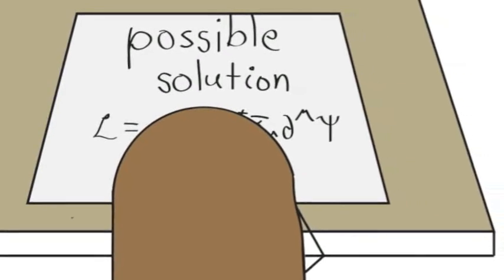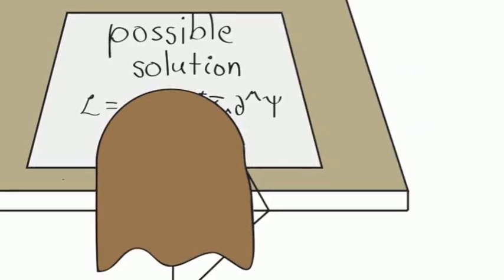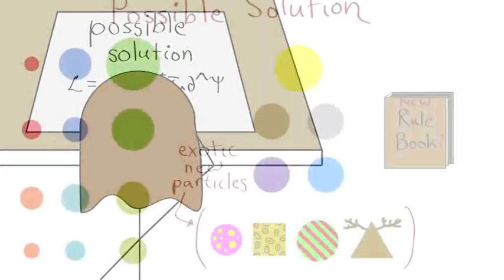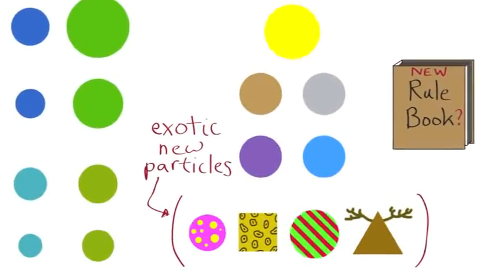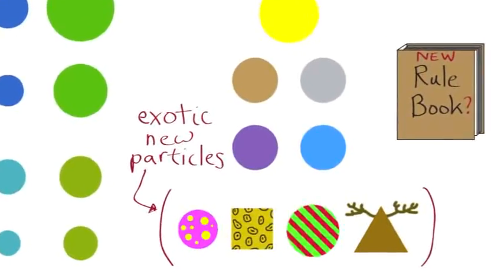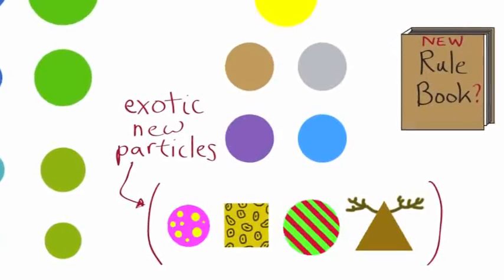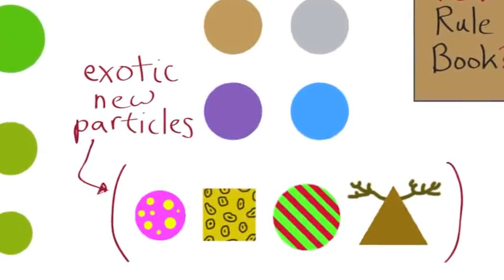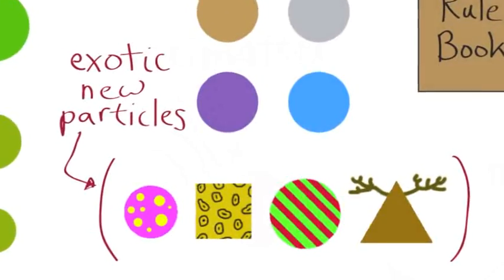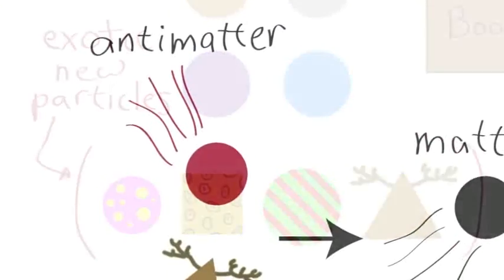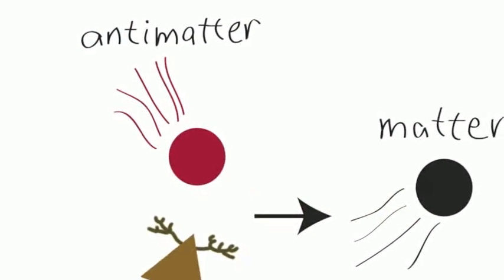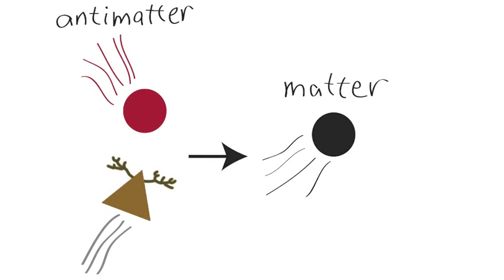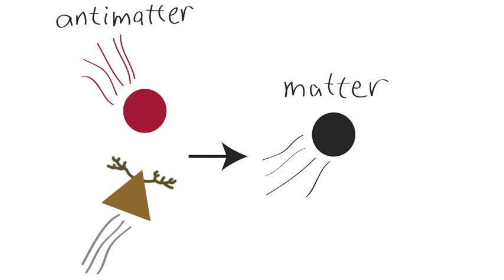Some clever physicists have come up with possible solutions to these problems and others. Most of their theories include a zoo of exotic new particles which have yet to be discovered. Some of these new particles could account for the matter that we can't see, or could interact in such a way that would result in all antimatter getting destroyed while some matter survived.